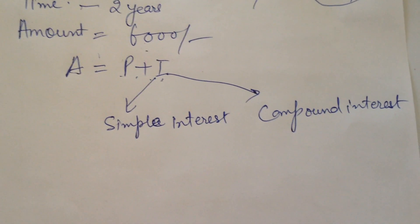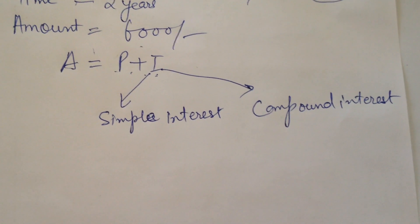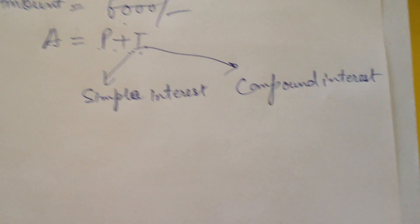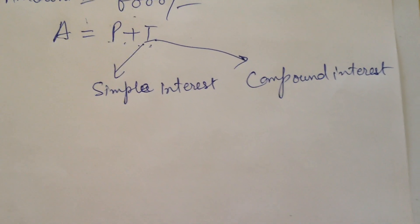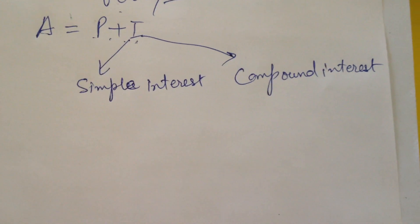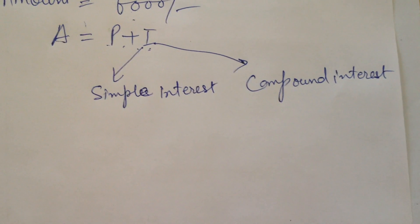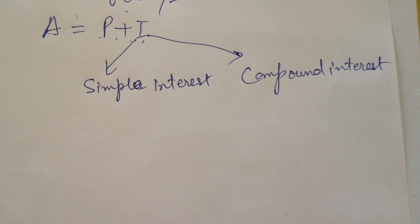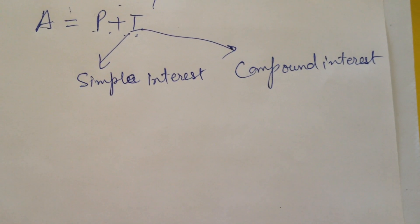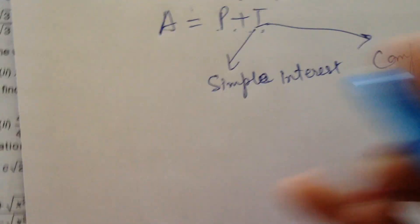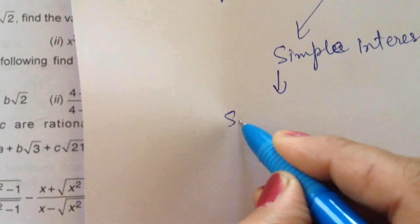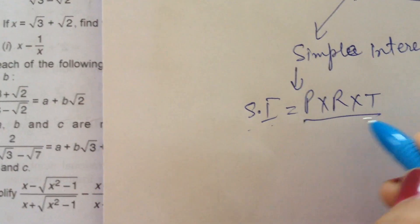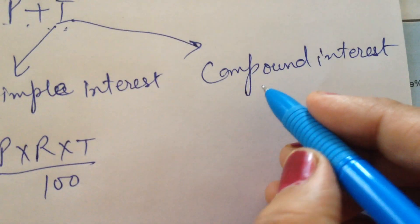In simple interest, you calculate for the total time given using a simple formula. Compound interest is added after every one year — or if semi-annually, then after 6 months. Simple interest can be calculated by the formula: SI equals P into R into T upon 100. Compound interest is added every year separately.